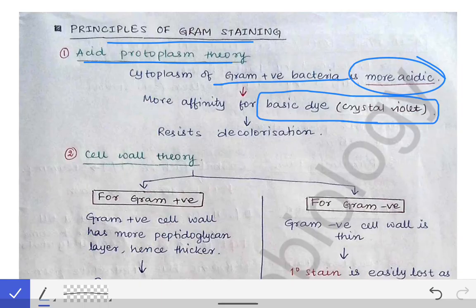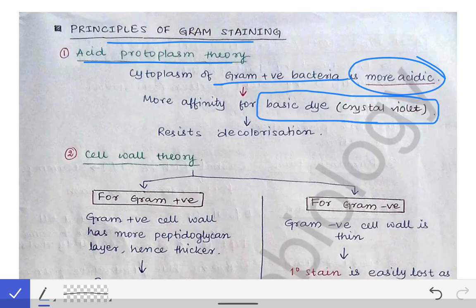In the case of Gram-negative bacteria, the cytoplasm is less acidic, so less crystal violet attaches, and some of it gets washed away during the staining steps. That is why the Gram-negative bacteria takes the counter stain and becomes pink. Due to the higher affinity between crystal violet and the more acidic Gram-positive cytoplasm, the violet color is retained and resists decolorization.